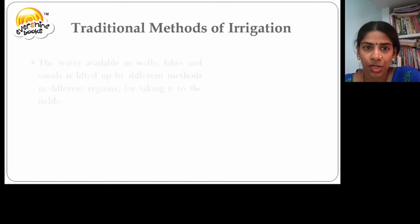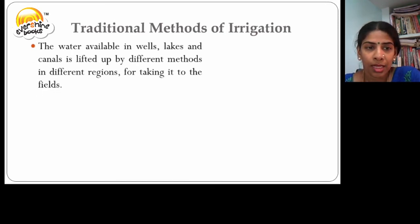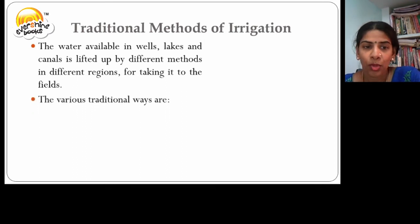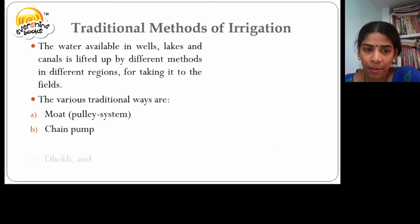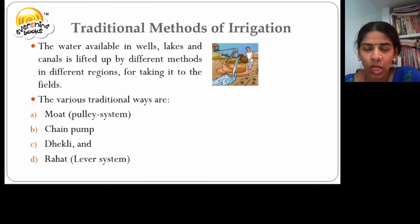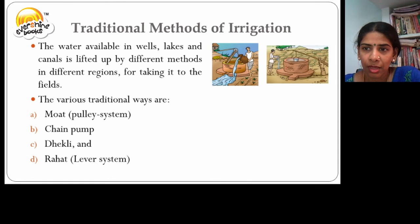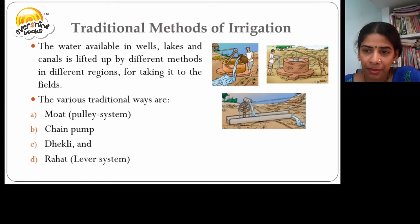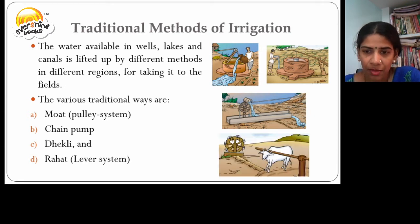Traditional methods of irrigation. The water available in wells, lakes and canals is lifted up by different methods in different regions for taking it to the fields. The various traditional ways are moat (pulley system), chain pump, dhekli and rahat. The moat system uses a pulley system. The chain pump uses a wooden mechanism. The dhekli system and the rahat system, which is a lever system, are also used.